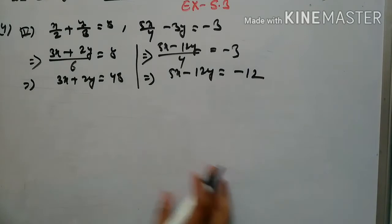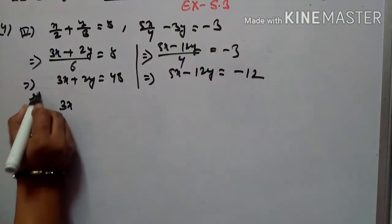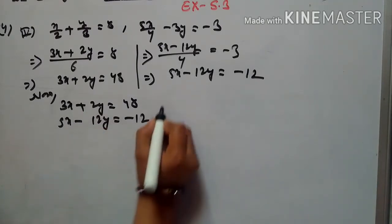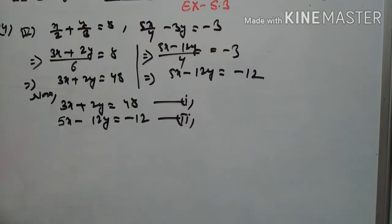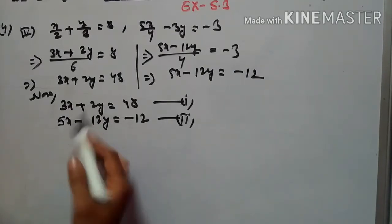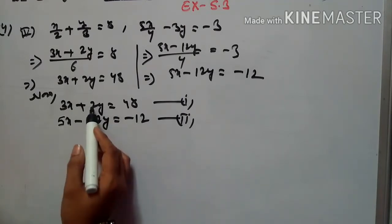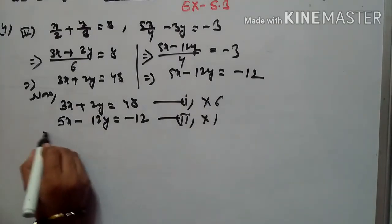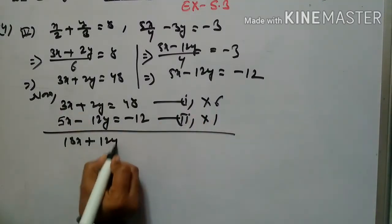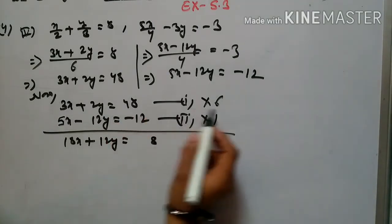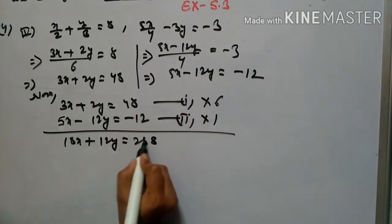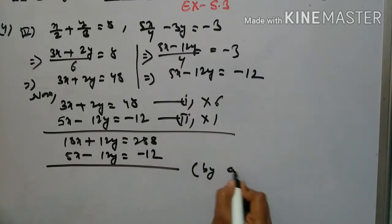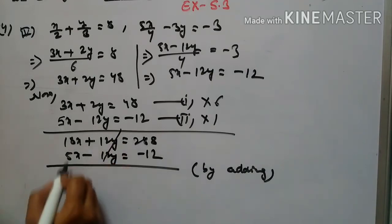We have equation 1: 3x + 2y = 48 and equation 2: 5x - 12y = -12. To eliminate y, we multiply equation 1 by 6 and equation 2 by 1, giving 18x + 12y = 288 and 5x - 12y = -12. By adding, the y terms cancel out.